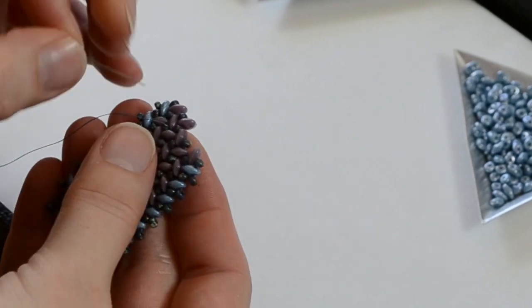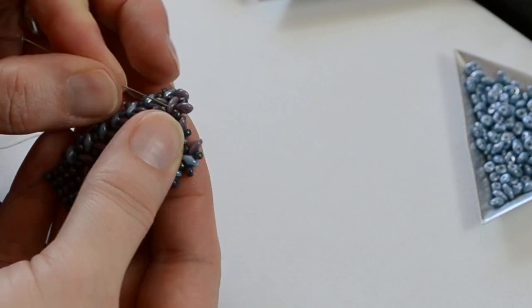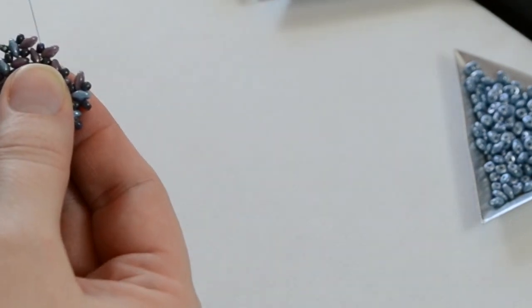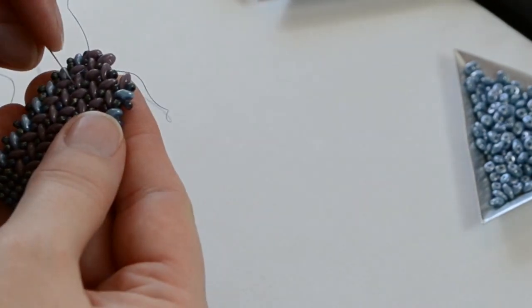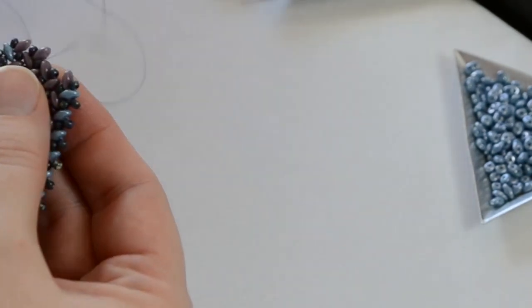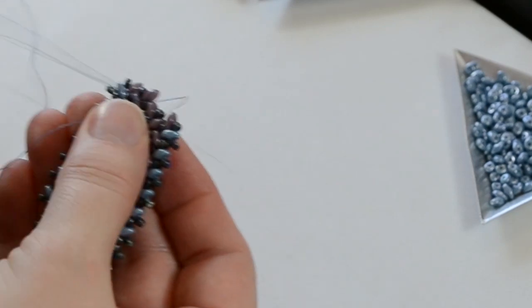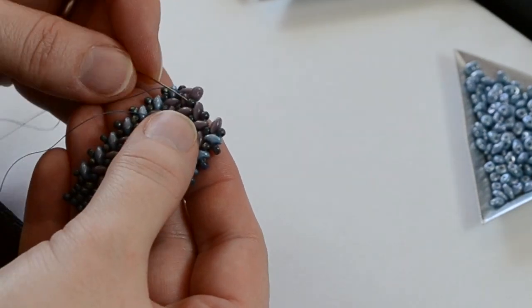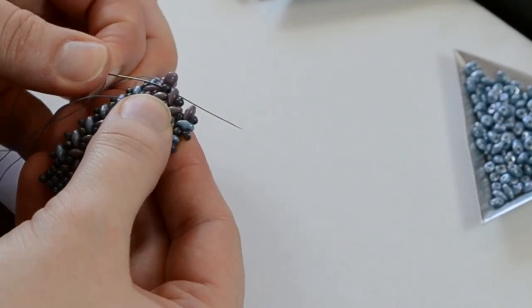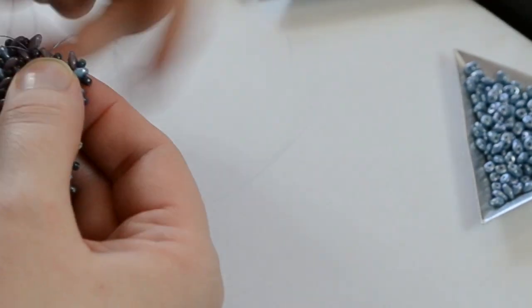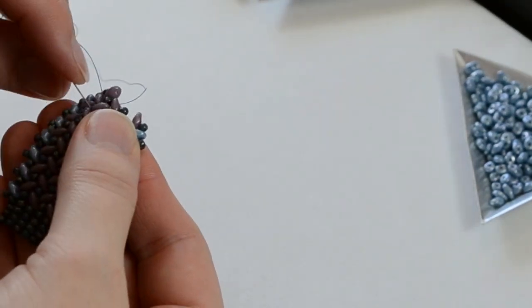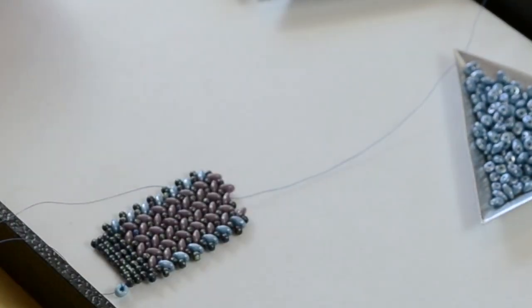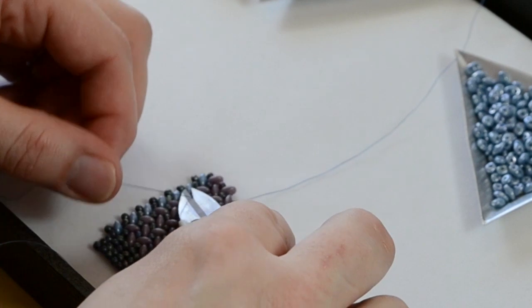I'm just going to weave over bead by bead. Don't catch your tail. Here we are, now exiting the same bead that we would have exited previously with our original thread. Now you're ready to continue stitching. You can snip off this little tail. There you go.